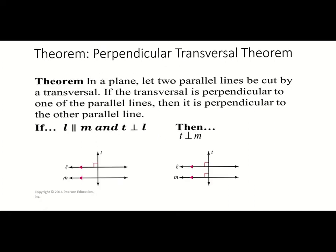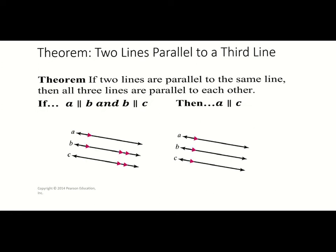Our next theorem is the perpendicular transversal theorem. It states that if you have a plane with two parallel lines cut by a transversal, and that transversal is perpendicular to one of the parallel lines, then it is perpendicular to both lines. If it's perpendicular to one, it's perpendicular to the other.